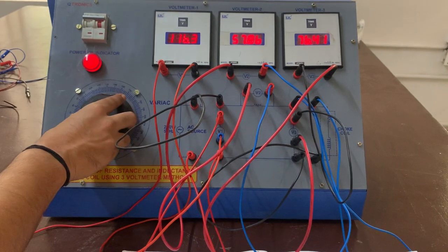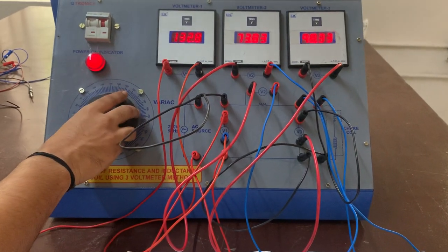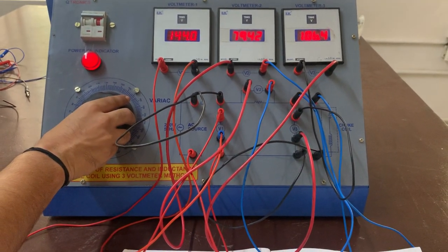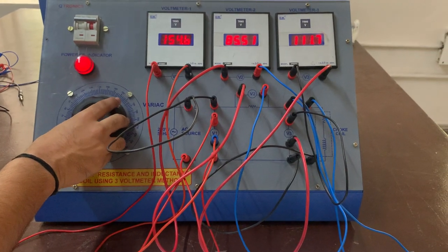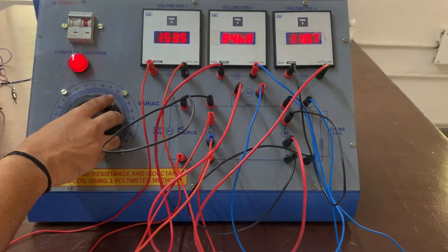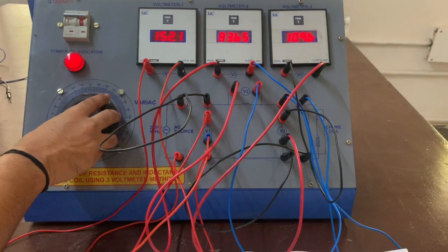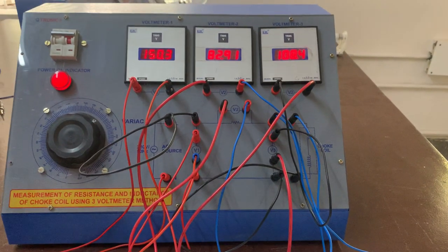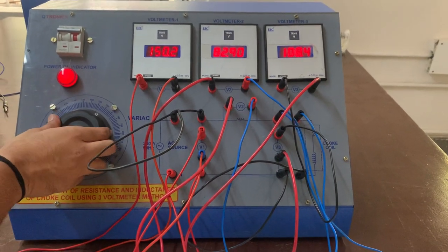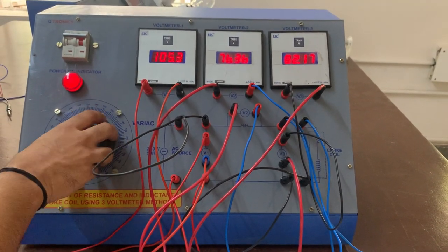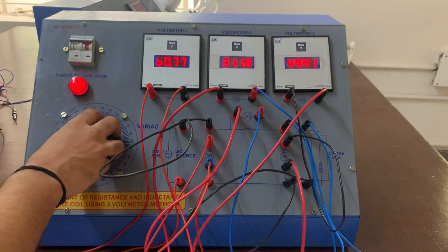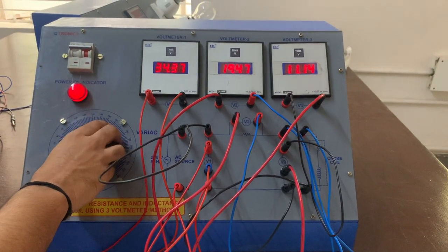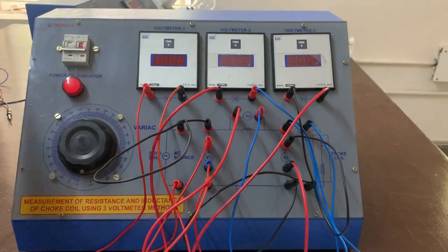For the final reading, we'll set it to 150. Once we've noted down all the readings, we'll turn the rheostat position back to zero and switch off the main supply.